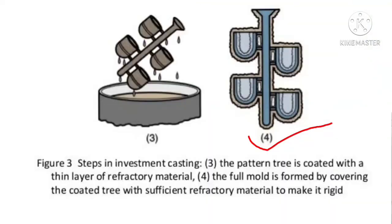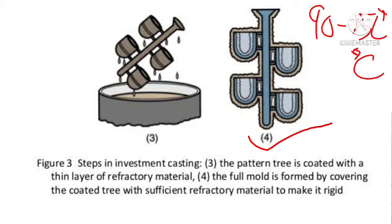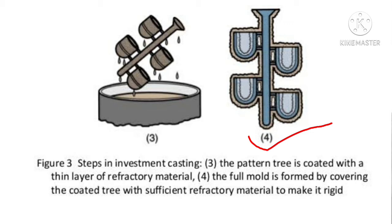The fourth step is that we place the entire assembly in the autoclave for melting most of the wax. The temperature is 90 to 175 degrees Celsius. We call this initial heating, or pre-heating, because there are two stages of heating: pre-heating and final heating.